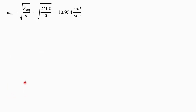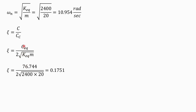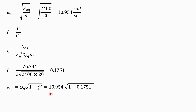Using these equivalent values, omega_n equals the square root of k_equivalent divided by m, that is the square root of 2400 divided by 20, giving 10.954 radians per second. The damping factor zeta equals c upon cc, where the critical damping coefficient cc equals 2 times the square root of k_equivalent times m. With c_equivalent equal to 76.744, k_equivalent 2400, and m equal to 20, zeta comes out to be 0.1751. The damped circular frequency omega_d equals omega_n times the square root of (1 minus zeta squared), giving 10.954 times the square root of (1 minus 0.1751²), which equals 10.7848 radians per second.